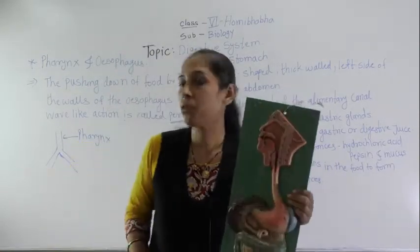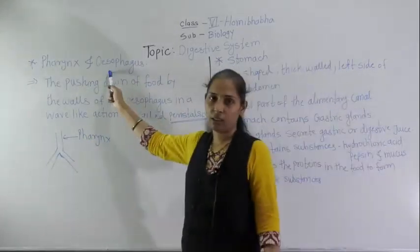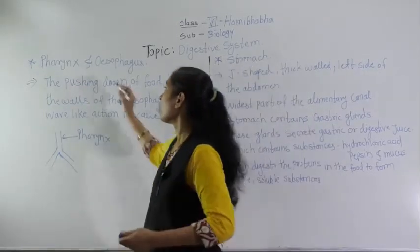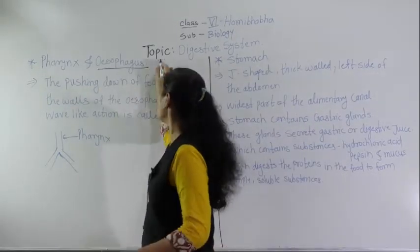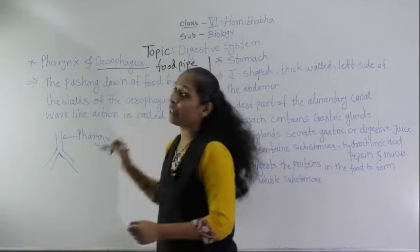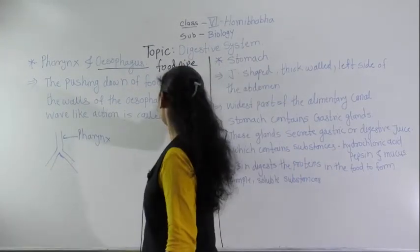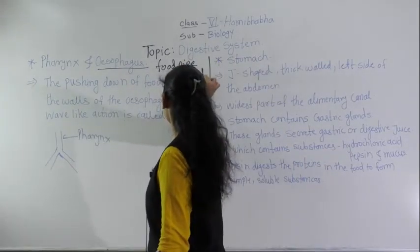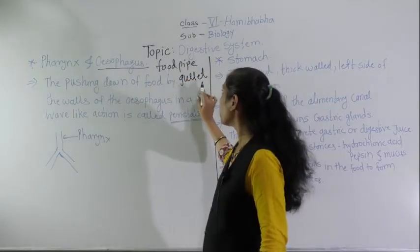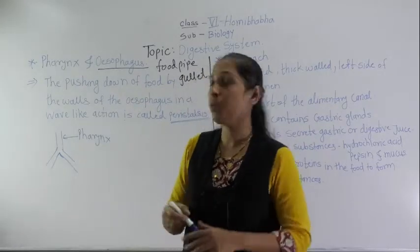The next organ of the digestive tract is the esophagus. The esophagus is also called the food pipe or the gullet.